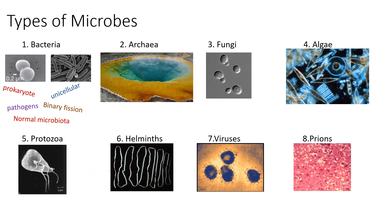Bacteria reproduce asexually via a process called binary fission, where one cell copies its DNA and kind of stretches and breaks off into two cells — that's how they replicate. Lastly, for bacteria, there are three general categories of bacteria shapes: coccus, which is circular; bacillus, which is rod-shaped; and spirillum, which is a spiral-shaped cell.